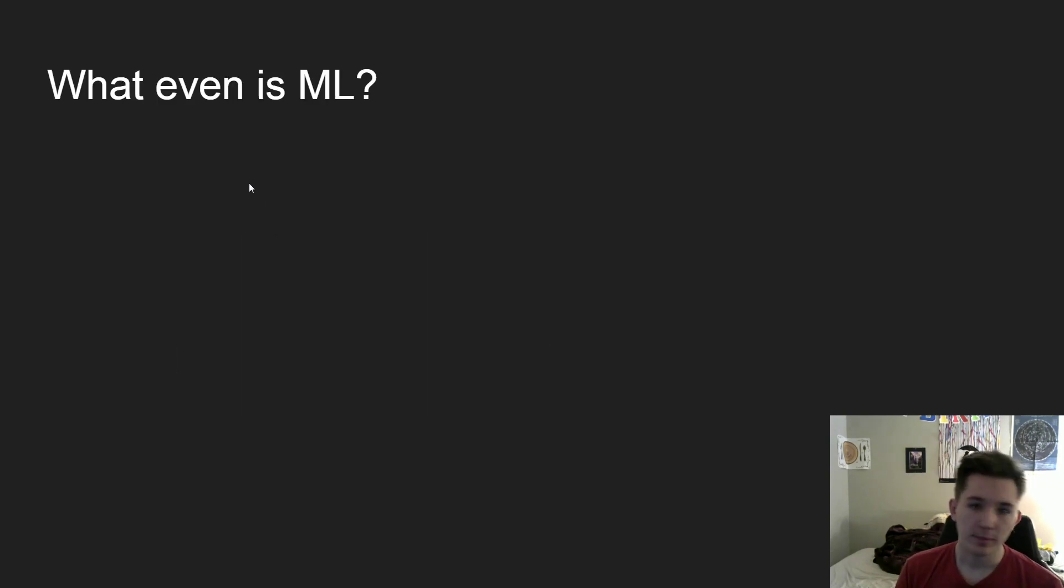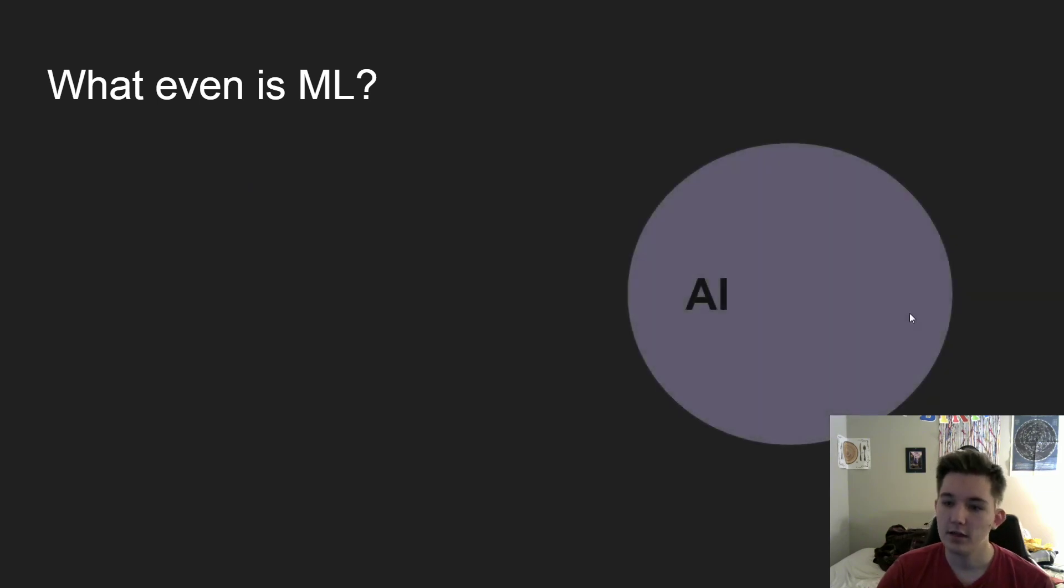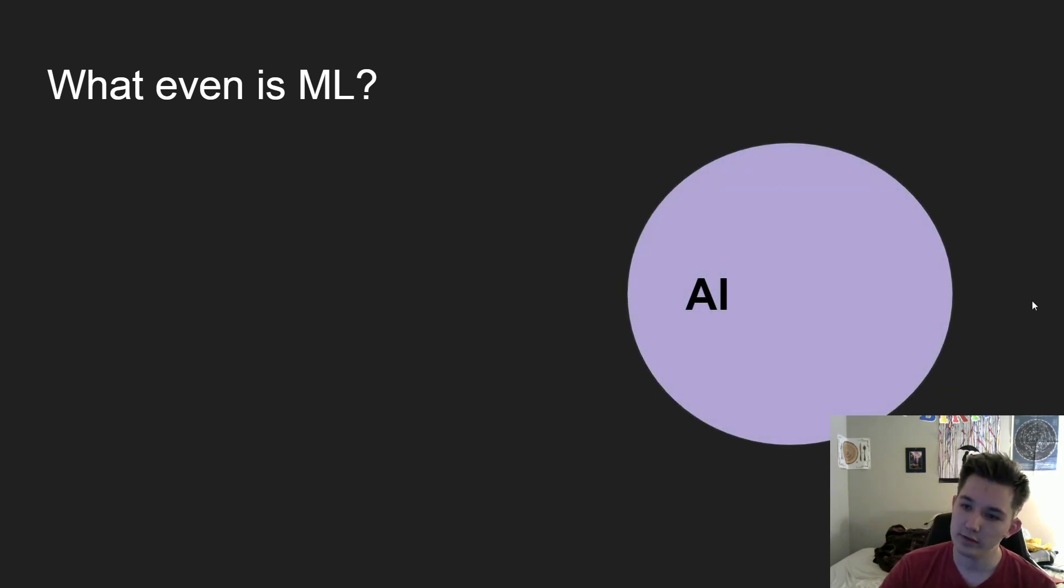So there's a lot of confusion about what ML actually is. Even in the ML community, it's a little bit debated, but in basic, we have AI here. These are all AI algorithms and solutions that we use, and we can think of ML as a subsection of AI.